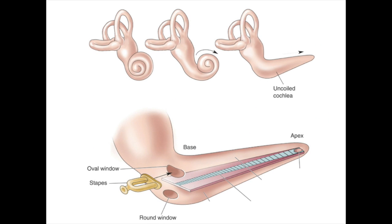The inner ear consists of a structure called the cochlea. The cochlea has a spiral shape resembling a snail's shell. Inside the cochlea is the basilar membrane. Pressure waves generated in the cochlea cause the basilar membrane to vibrate back and forth. Certain sections of the basilar membrane vibrate to certain frequencies of sound, where vibrations at the base are due to high-frequency sounds, and vibrations at the apex are due to low-frequency sounds.